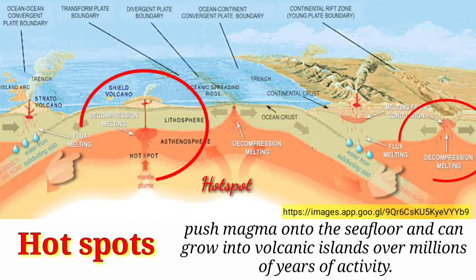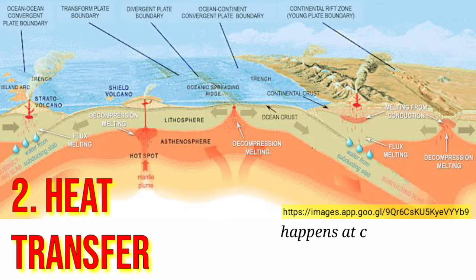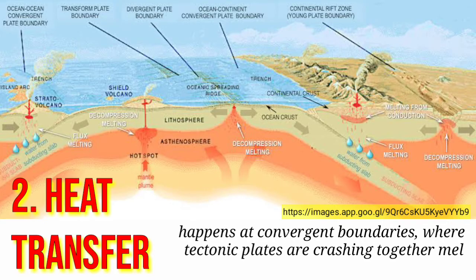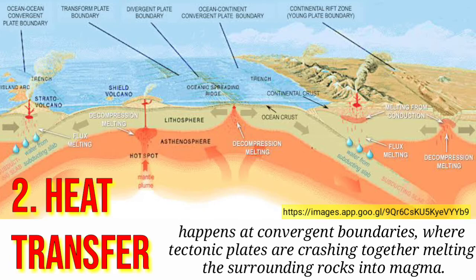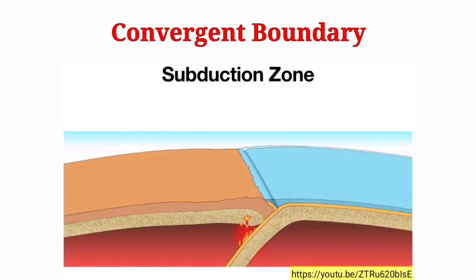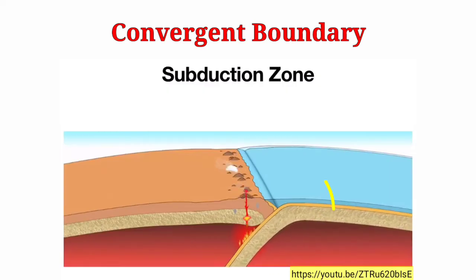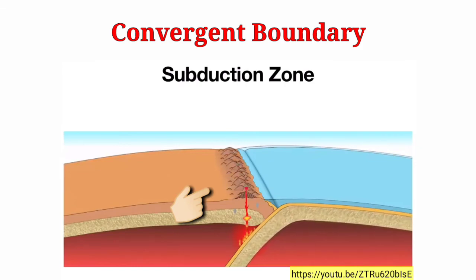Magma can also be created when hot liquid rock intrudes into Earth's crust. This is called heat transfer. This happens at convergent boundaries where tectonic plates are crashing together, melting the surrounding rocks into magma. As the denser tectonic plate subducts or sinks below, hot rock from below can intrude into the cooler plate above. This process transfers heat and creates magma. Over millions of years, the magma in this subduction zone can create a series of active volcanoes known as a volcanic arc.